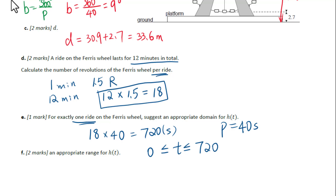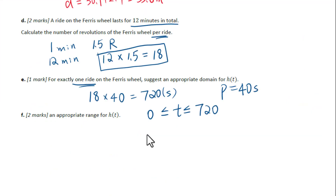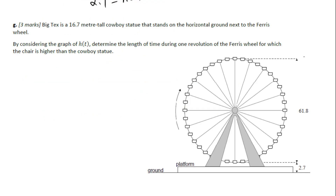Find an appropriate range for h of t. Since h means the height of a chair above the ground, the lowest distance is 2.7 meters. The highest distance is 61.8 plus 2.7, which is 64.5 meters. Therefore, the range for h of t is greater than or equal to 2.7, less than or equal to 64.5.